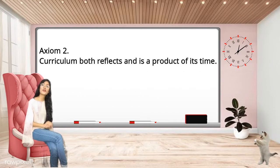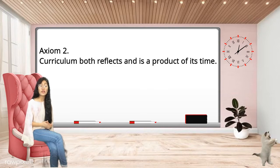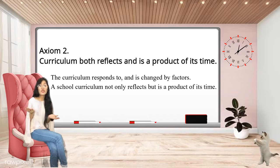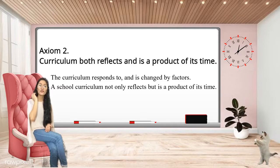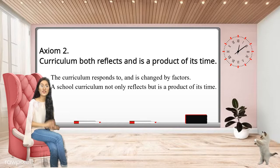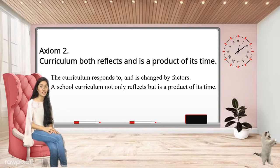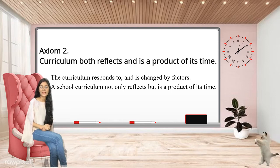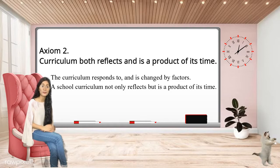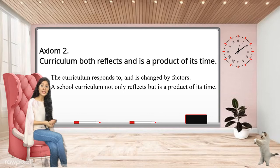Axiom 2: The curriculum not only reflects, but is also a product of its time. Axiom 2 is a corollary of the first axiom. Some curricula change too quickly and others are slow. The curriculum responds to and is changed by factors such as social forces, philosophical positions, psychological principles, accumulating knowledge, and educational leadership at its moment in history. An example of this is our situation today because of the pandemic — for the safety of all, the curriculum shifted to using other platforms such as online classrooms or online classes.